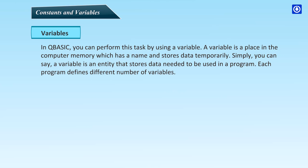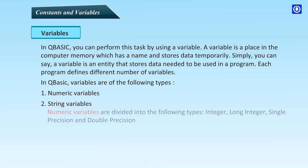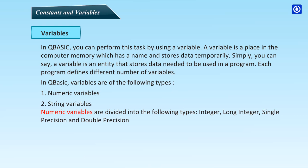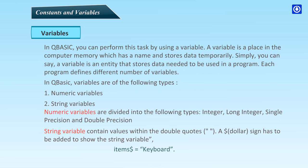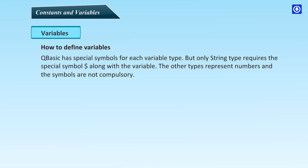Variables: in QBasic you can perform tasks by using a variable. A variable is a place in the computer memory which has a name and stores data temporarily. Simply put, a variable is an entity that stores data needed to be used in a program. Each program defines different numbers of variables. In QBasic, variables are of the following types: numeric variables and string variables. Numeric variables are divided into: Integer, Long Integer, Single Precision, and Double Precision. String variables contain values within double quotes, and a dollar sign must be added to show a string variable — for example: Items$ = "keyboard".